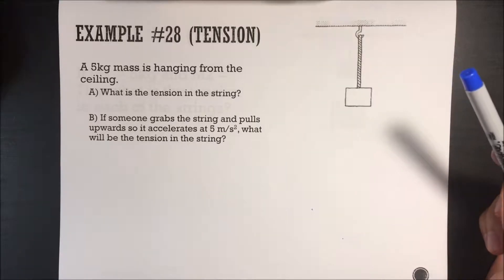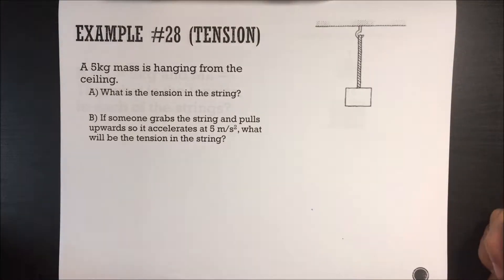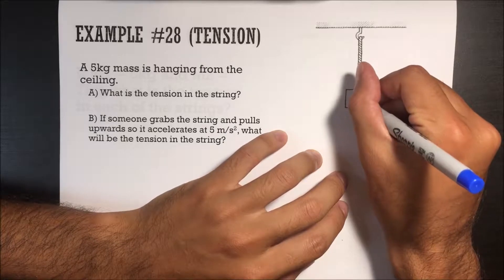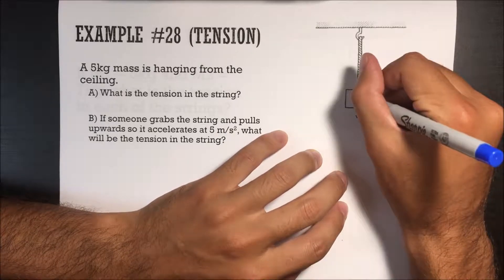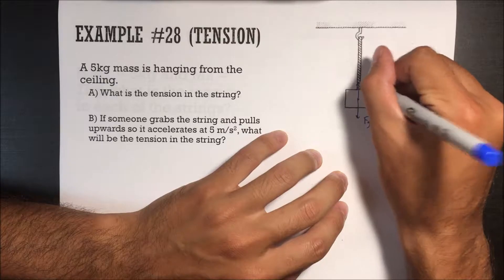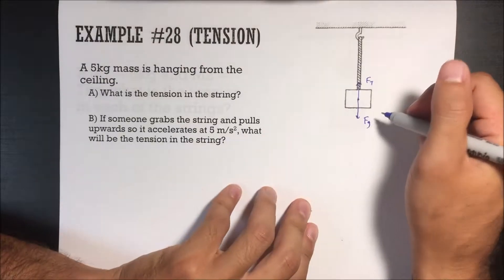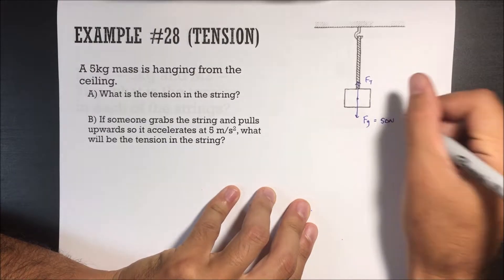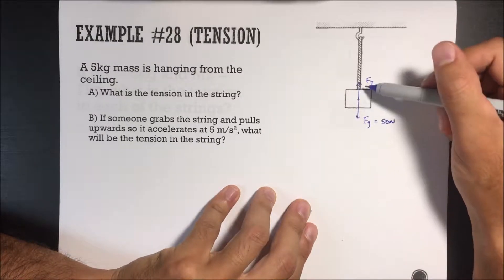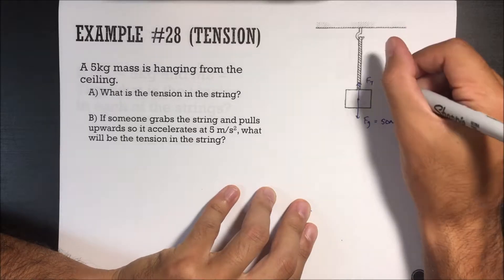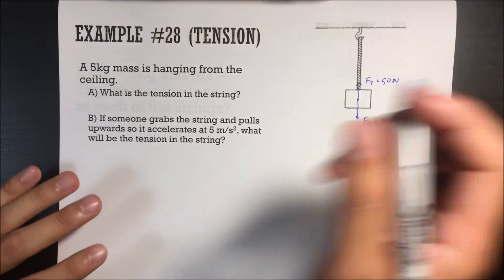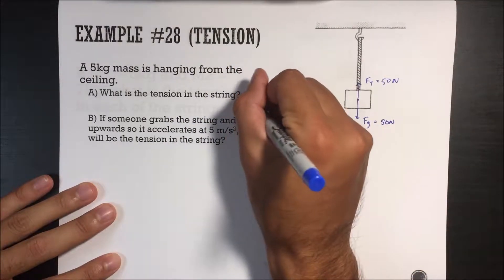If someone grabs a string and pulls it upwards so it accelerates at 5 meters per second squared, what will be the tension in the string? To solve this, first draw a free body diagram. We have force of gravity and force of tension. Force of gravity equals mass times gravity, so it's 5 times 10 equals 50 newtons. Since it's not moving and these are the only two forces in the y direction, they have to cancel each other out. So the tension in the string is 50 newtons.